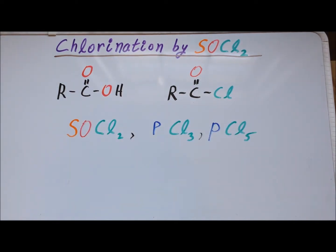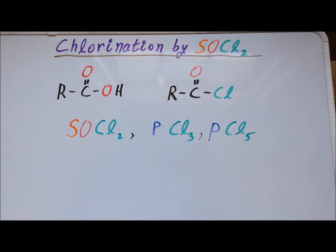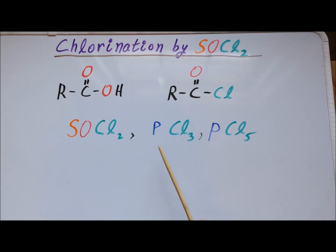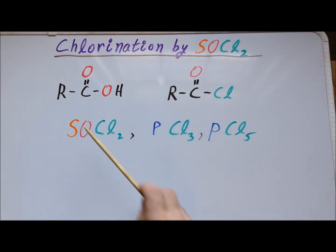To achieve the conversion of the carboxylic acid into the corresponding acid chloride, there are three commonly used reagents. The first is SOCl₂, thionyl chloride; PCl₃, phosphorous trichloride; and PCl₅, phosphorous pentachloride. This video is going to concentrate exclusively on the use of thionyl chloride for this reaction.